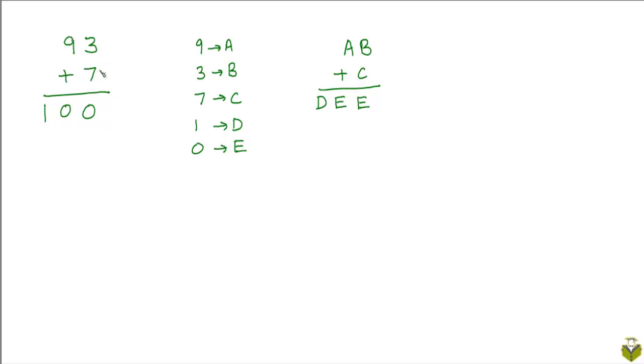In this example, you can see that after replacing the digits 9, 3, 7, 1, and 0 by the letters A, B, C, D, and E, we get the following encoded exercise: AB plus C is DEE.